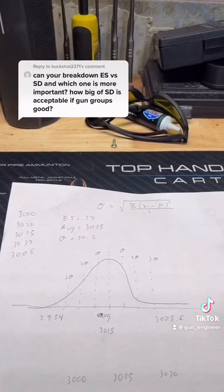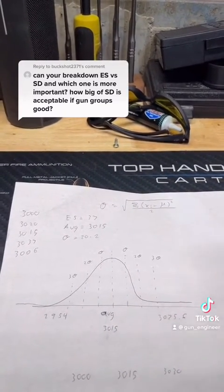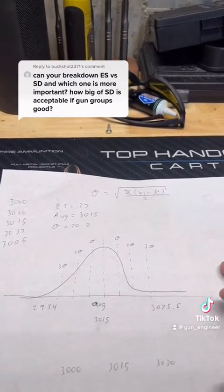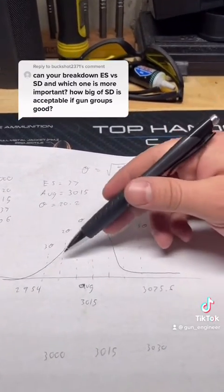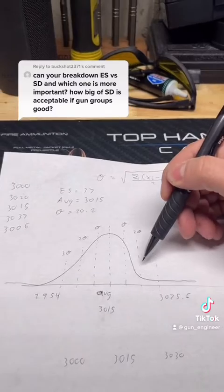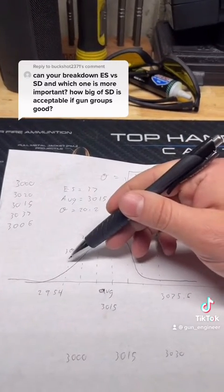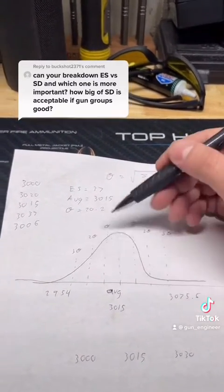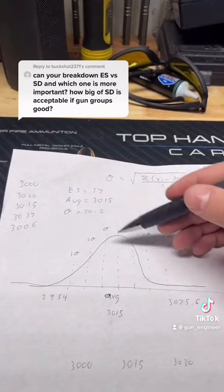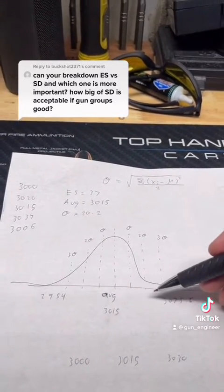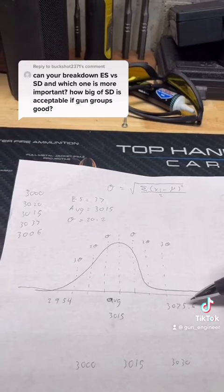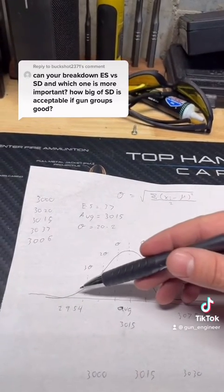So that means that 99 percent of your shots will be in a velocity between three standard deviations high and three standard deviations low from your average. So with an SD of 20 and an average of 3015, you end up with a high of 3075 and a low of 2954.